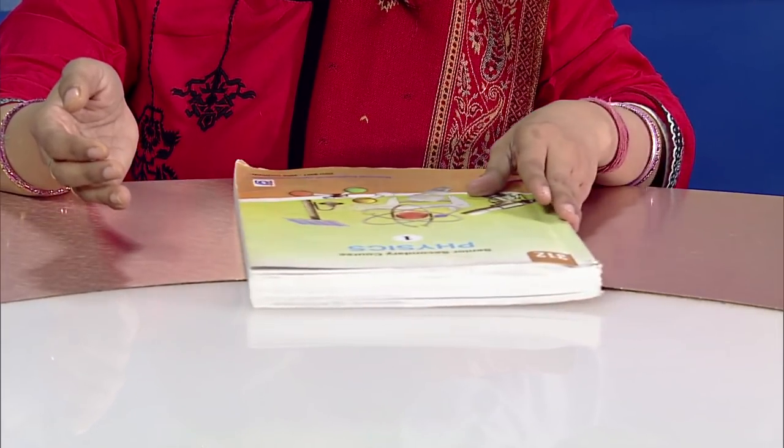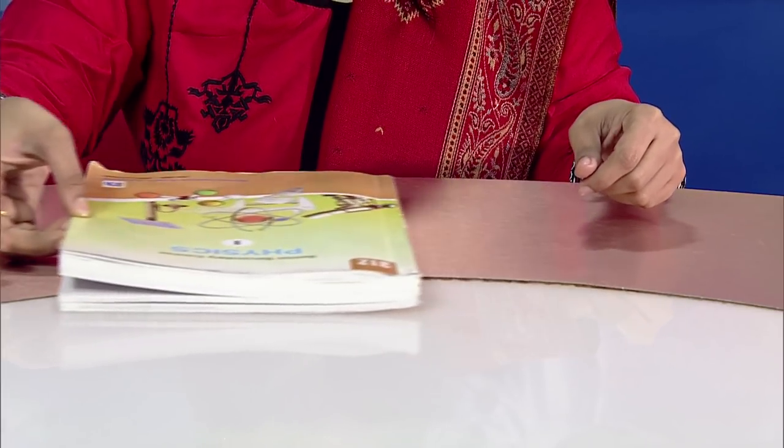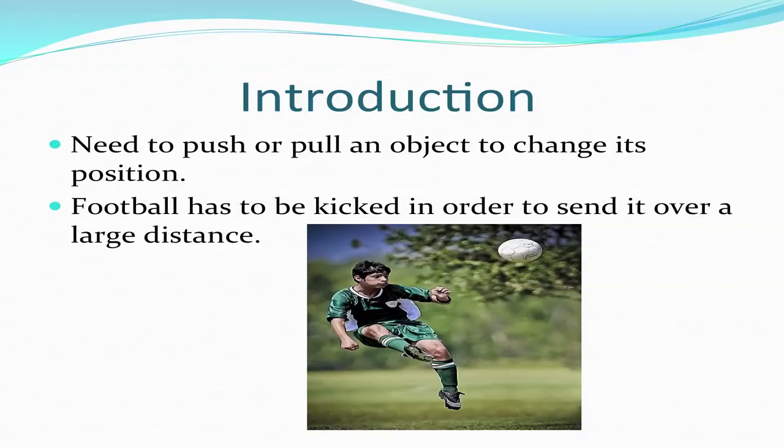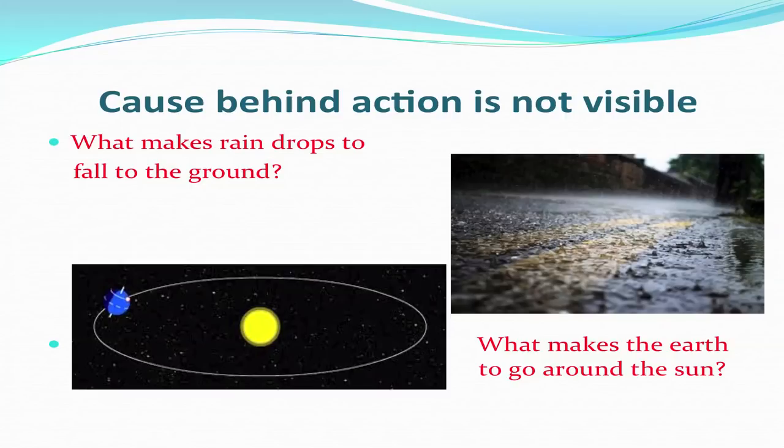An important question is: what makes an object move, or what causes a rolling ball to come to a stop? From our everyday experience, we know that we need to push or pull an object to change its position. A football has to be kicked to send it over a large distance. Muscular activity is involved in all these actions. However, there are many situations where the cause behind an action is not visible. For example, what makes raindrops fall to the ground? What makes the earth go around the sun?